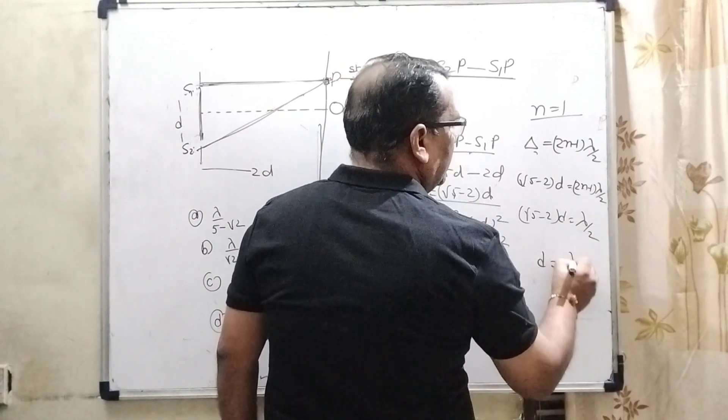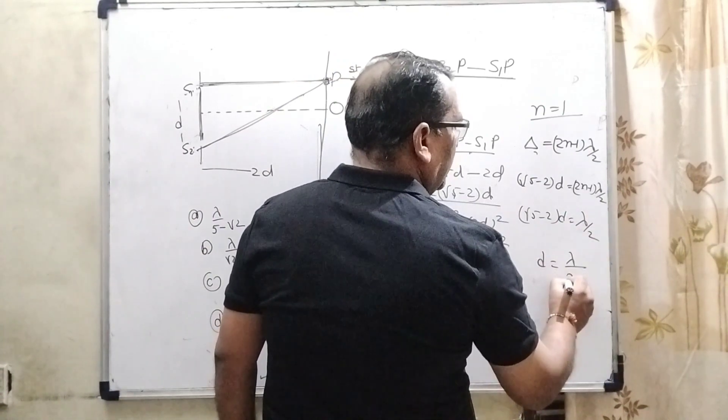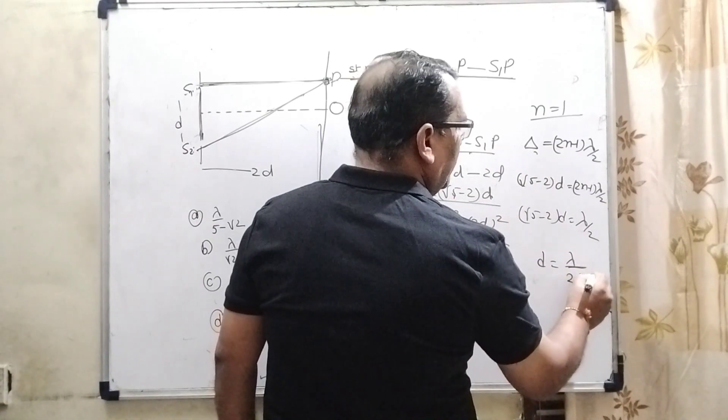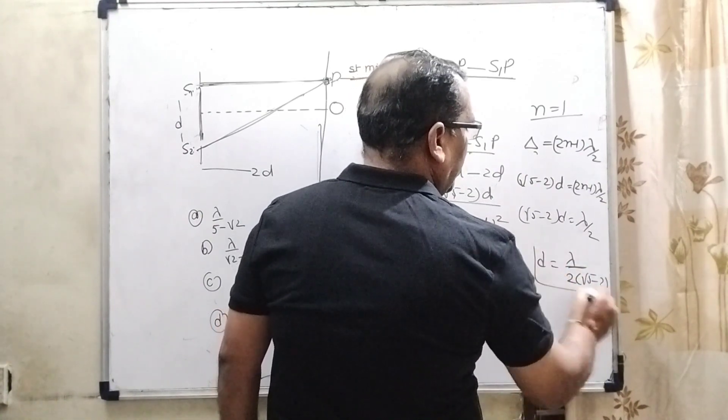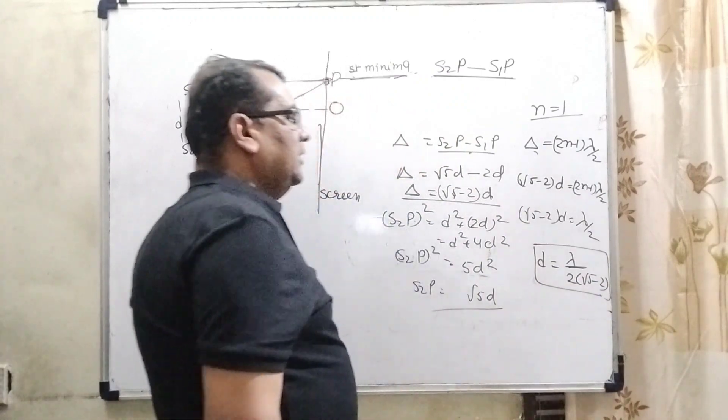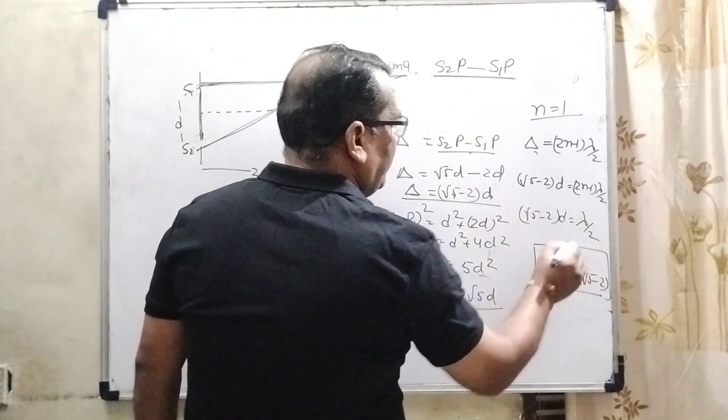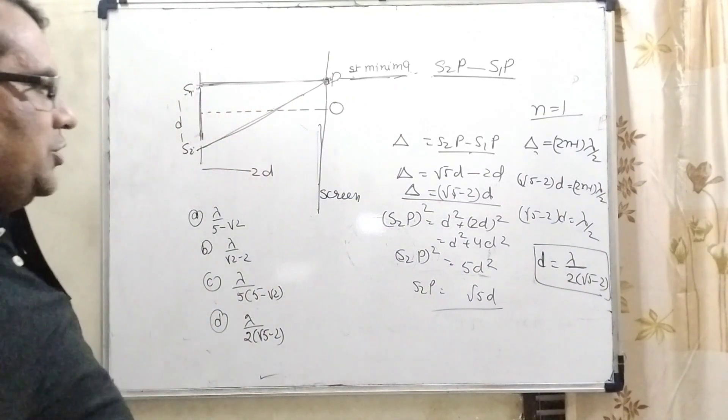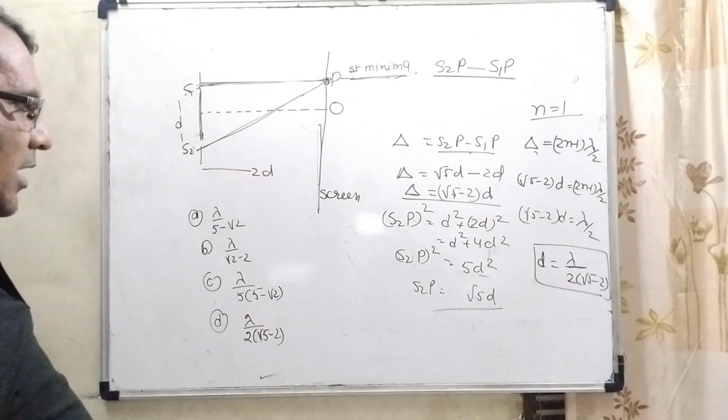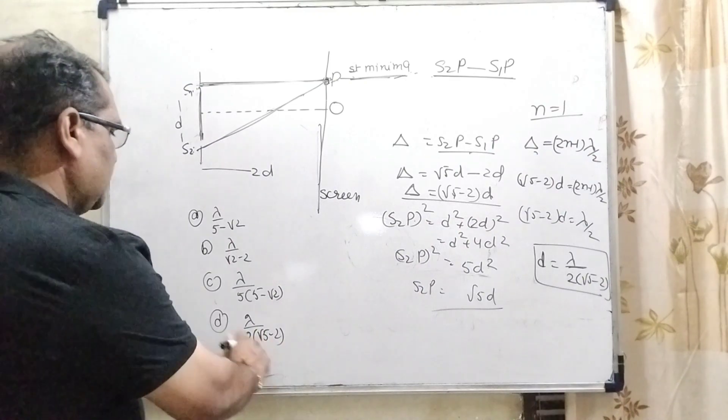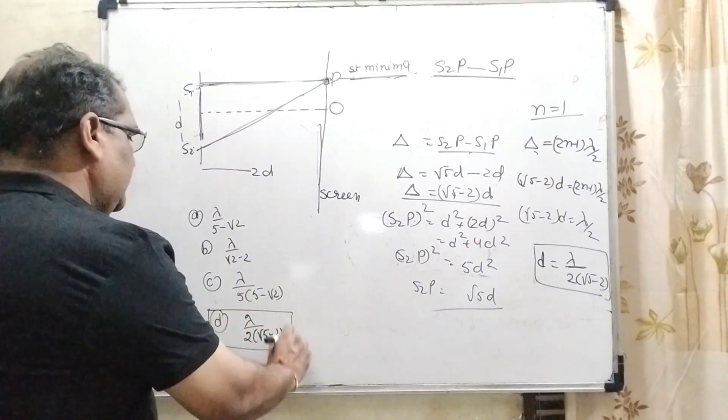Therefore, d equals lambda upon 2 into bracket root 5 minus 2. So, here is our answer: the distance between the two slits d in the form of lambda. Let us see which option is matched here. Lambda by 2 into root 5 minus 2 - option D is correct.